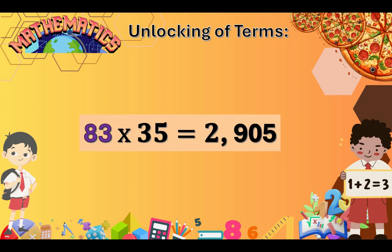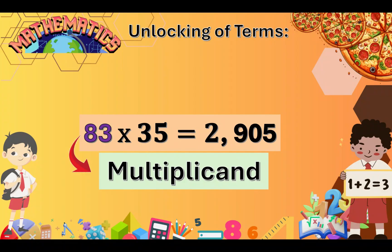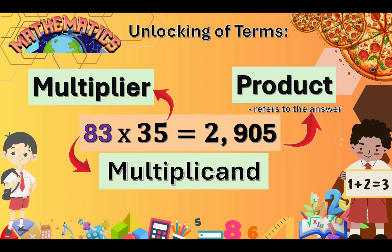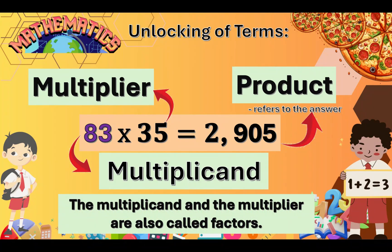Let's unlock some terms based on the numbers from the word problem. We have 83 member volunteers times 35 chairs equals a total of 2,905 donated chairs. 83 is our multiplicand, 35 is the multiplier, and 2,905 is called the product. Product refers to the answer for multiplication. The multiplicand and the multiplier are also called factors.